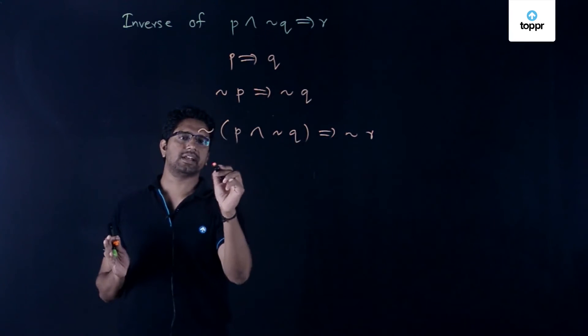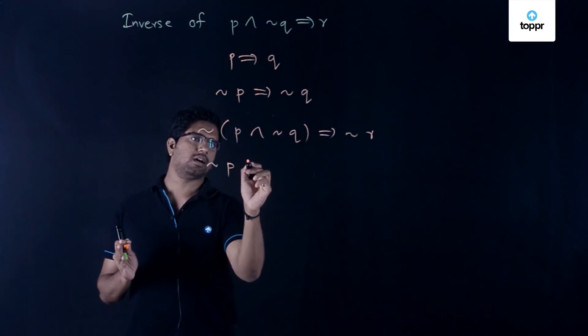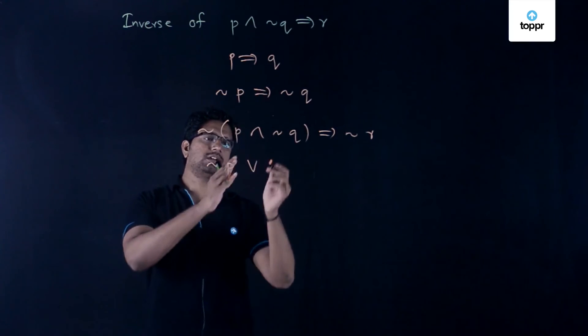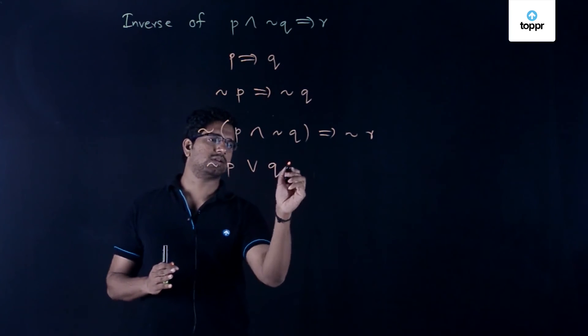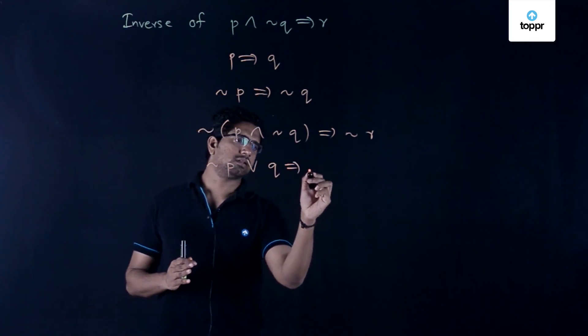Further we can simplify this and write as not p or not not becomes q itself. So this or q implies not r.